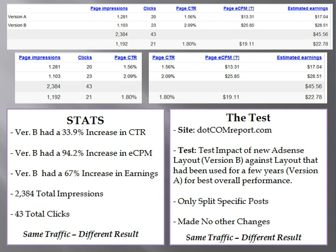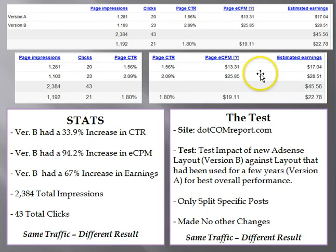On another site, we tested the layout of AdSense so that we could see the different formats on a page — does it really impact earnings that much? As you can see here, we created two channels, version A and version B. Look at the results. Version B had a 33.9% increase in click-through rate. The higher click-through rate had an eCPM increase of 94.2% and version B had a 67% increase in earnings. This was off of almost 2,400 impressions. Same traffic, different results.